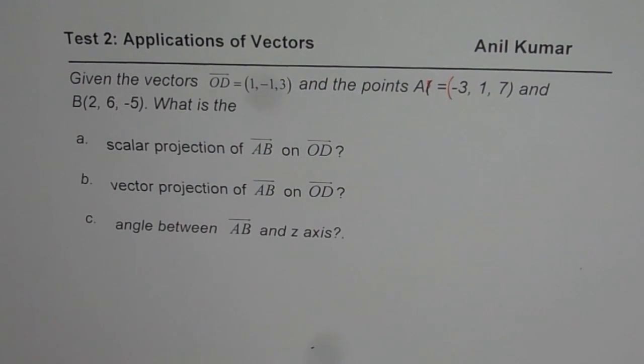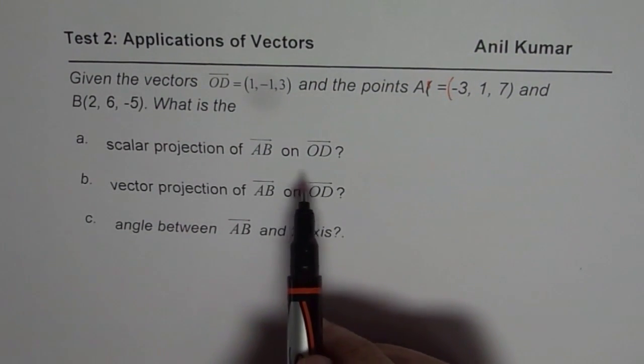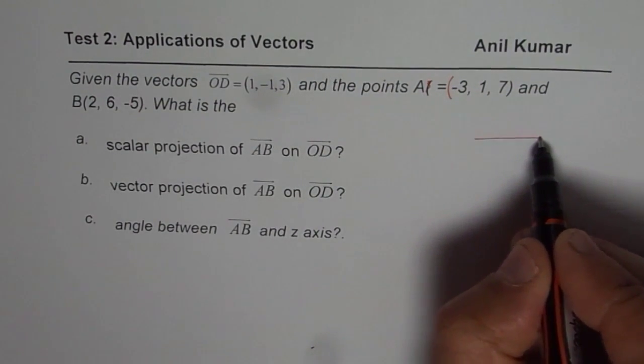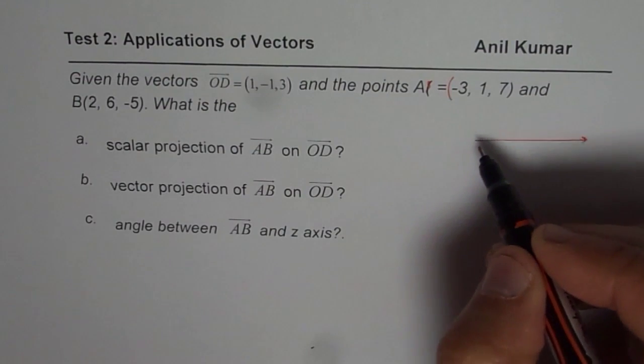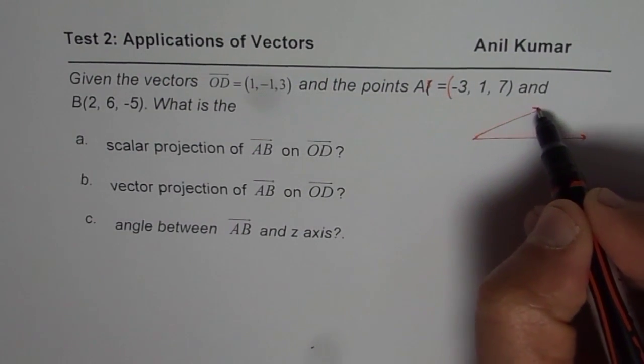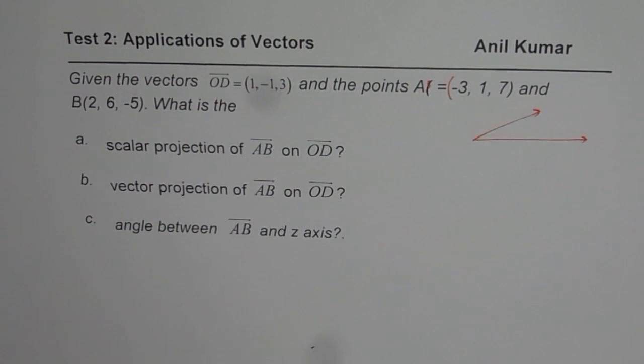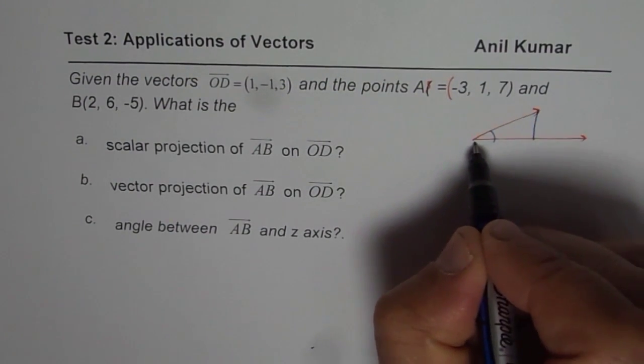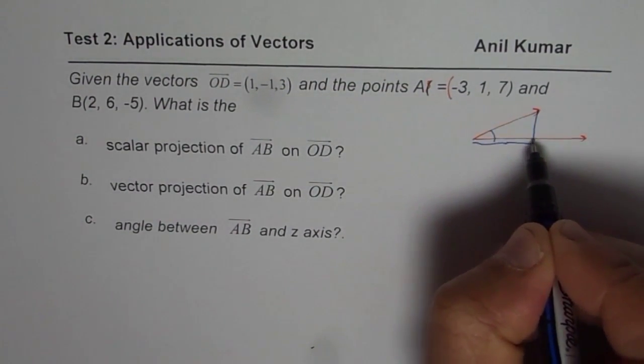Now I hope you remember what is scalar projection and what is vector projection. So basically if you have two vectors, let's say this is one vector, the other one is kind of like this. Then scalar projection is projection of this vector like this. So this length from here to here gives you the scalar projection.